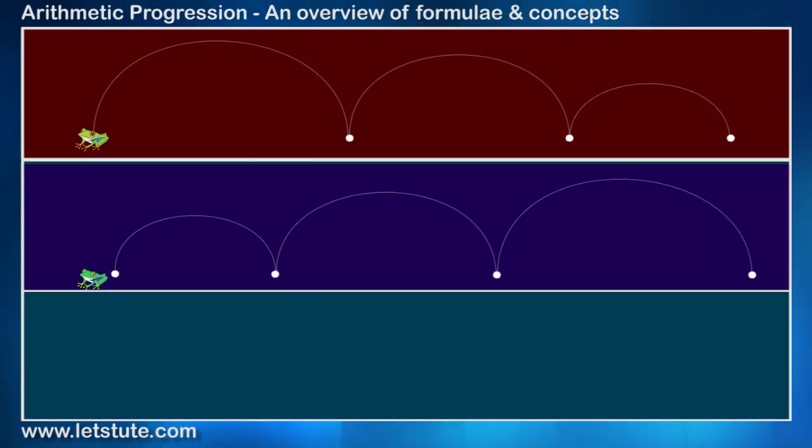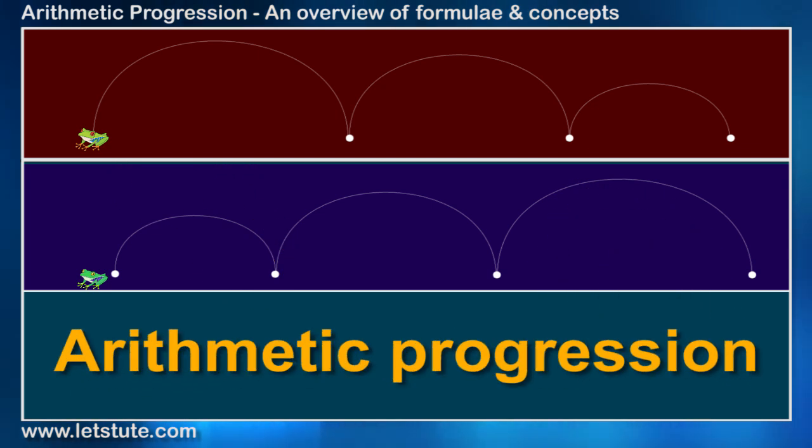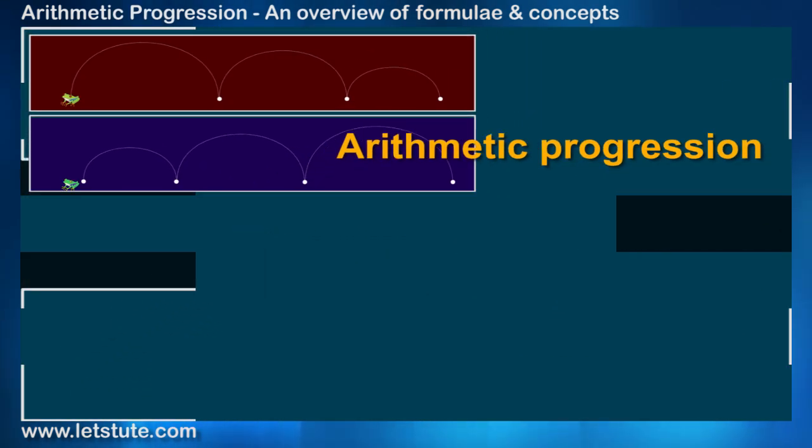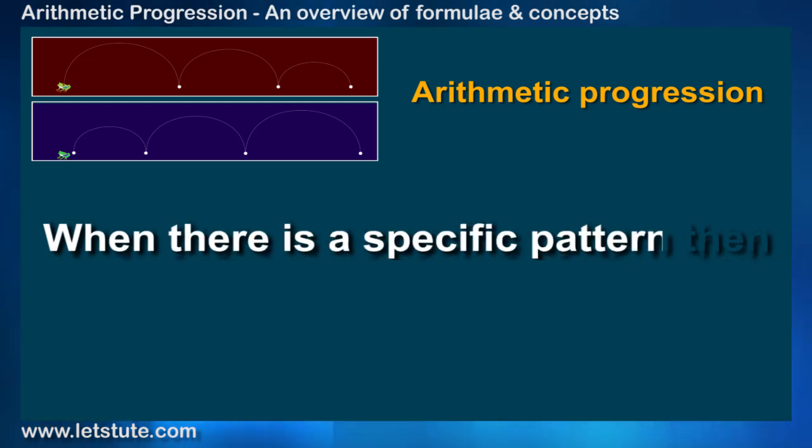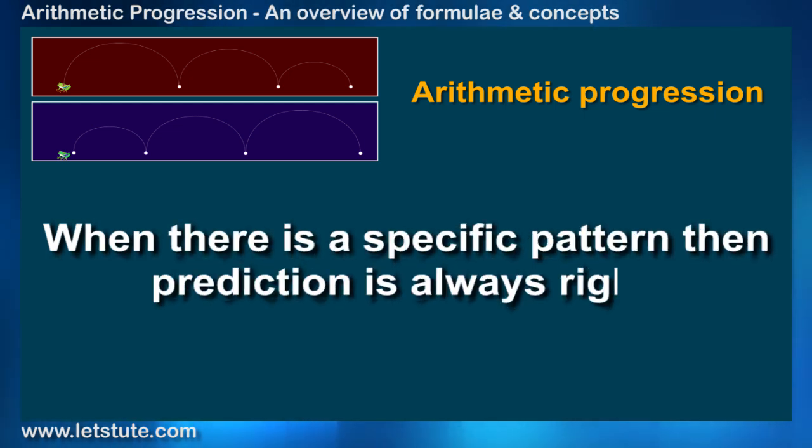On similar lines, we have an interesting topic in math called arithmetic progression, which deals with a particular type of pattern. And when there is a specific pattern, then prediction is always right, or we must say perfect.